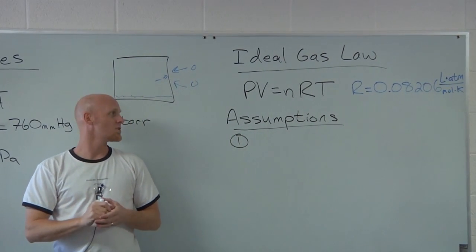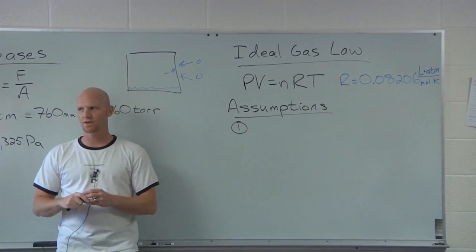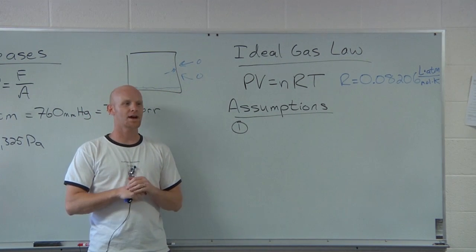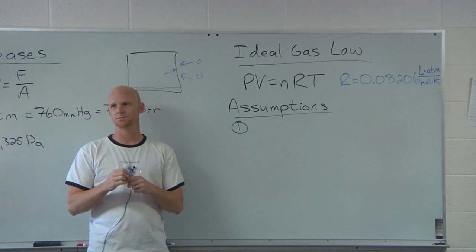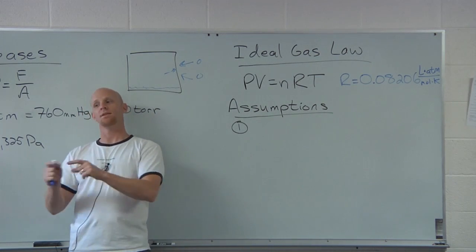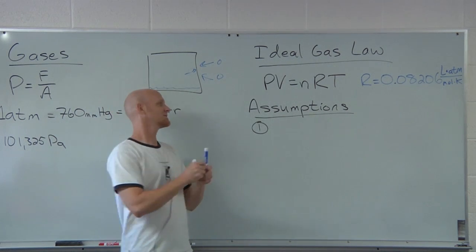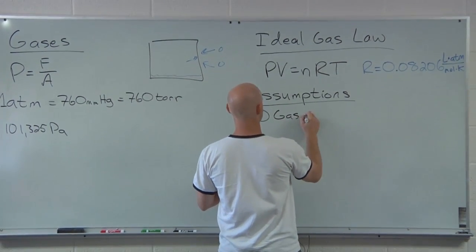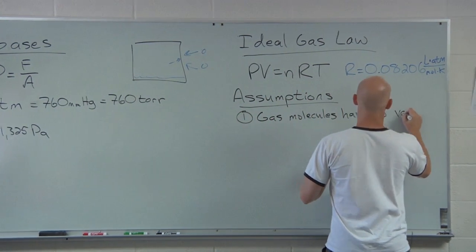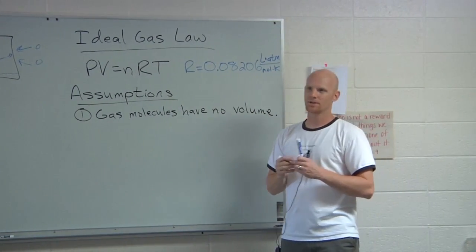What are the two big assumptions? Gas molecules do not have volume — they have no volume. And gas molecules don't have any attractive forces between them. These are the two key assumptions we make for an ideal gas.